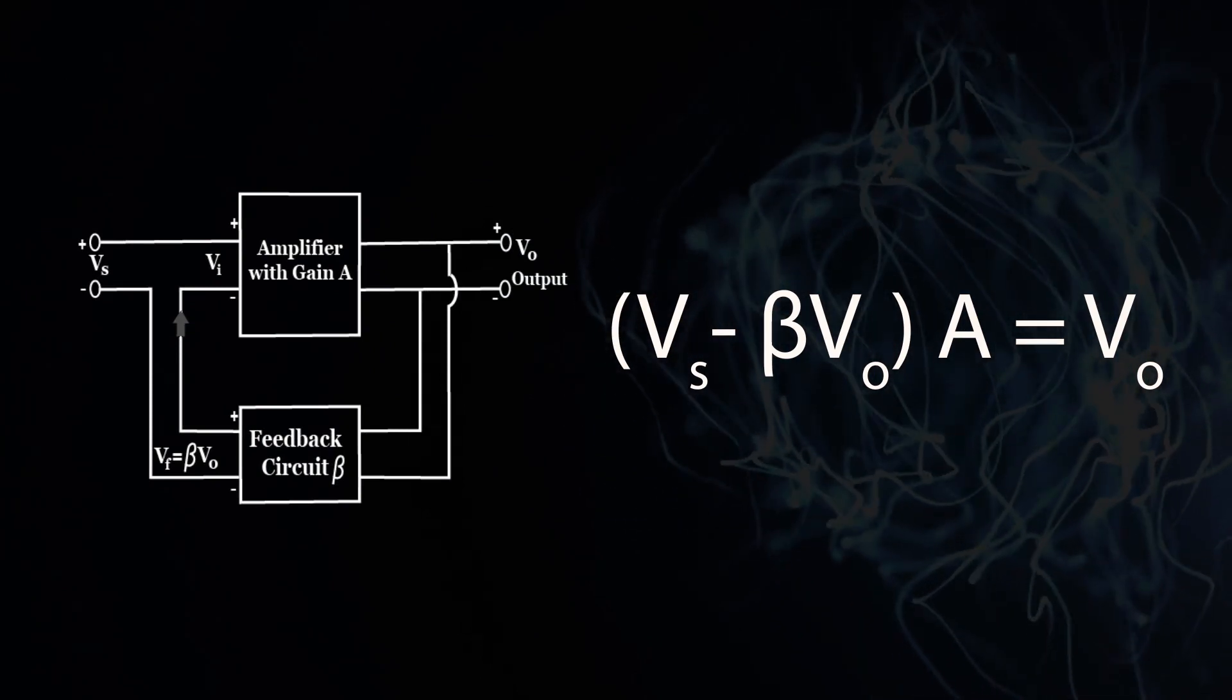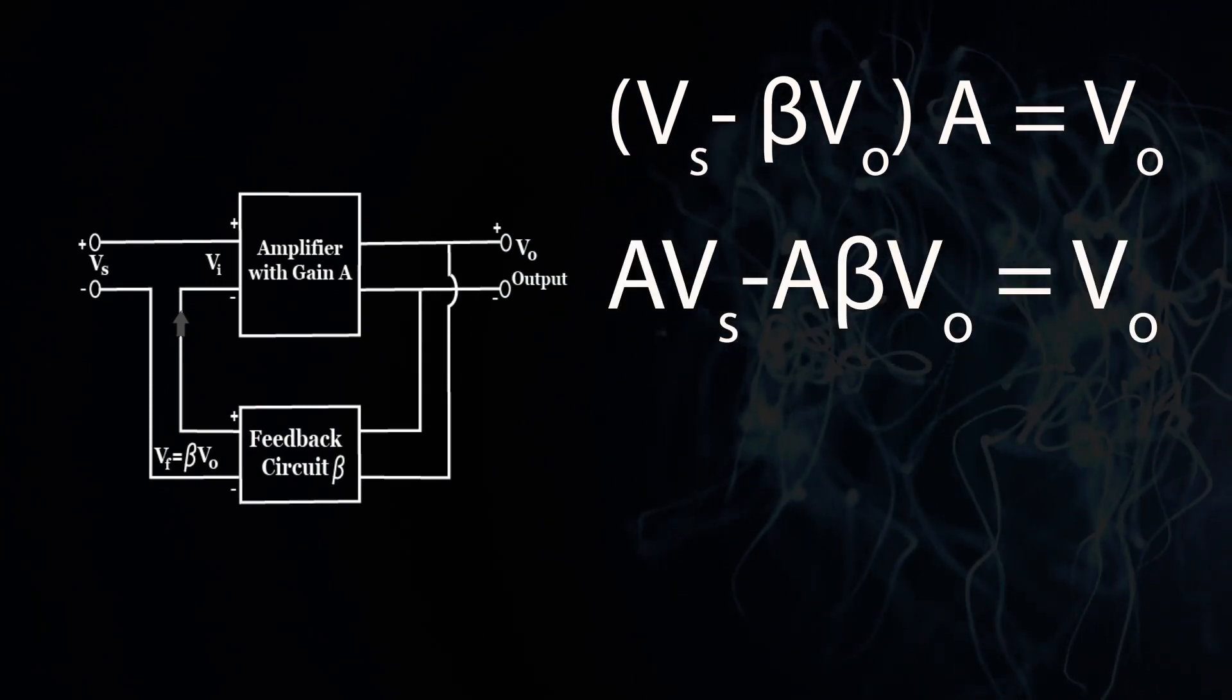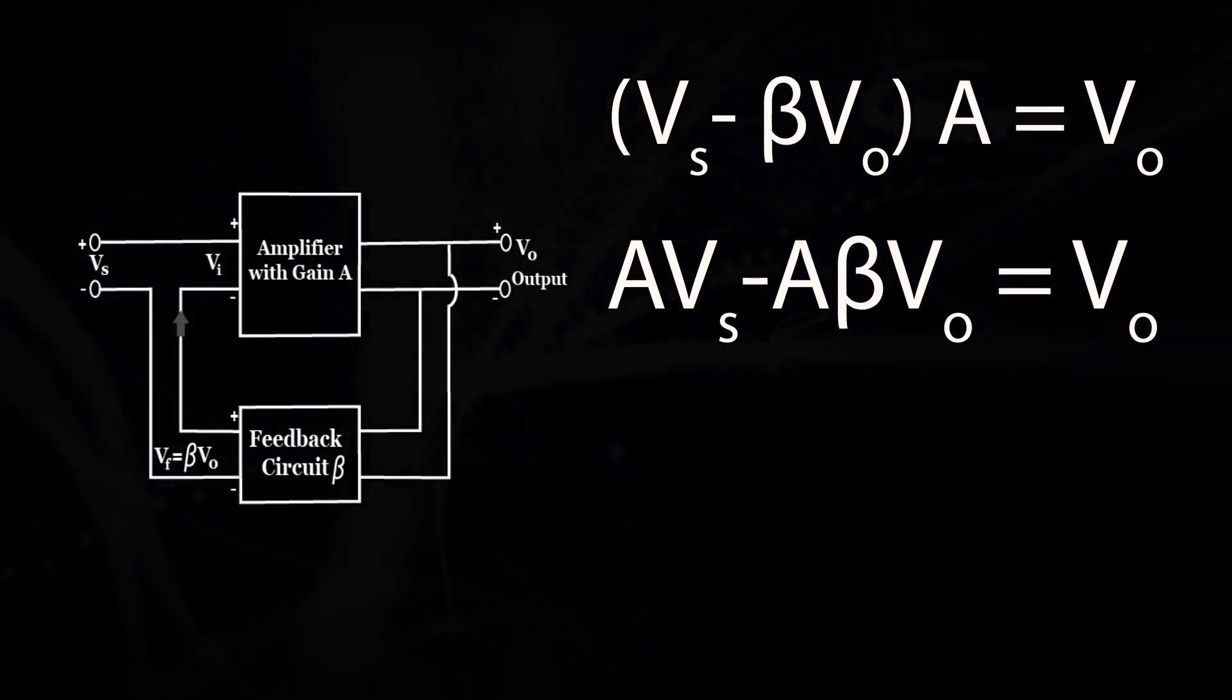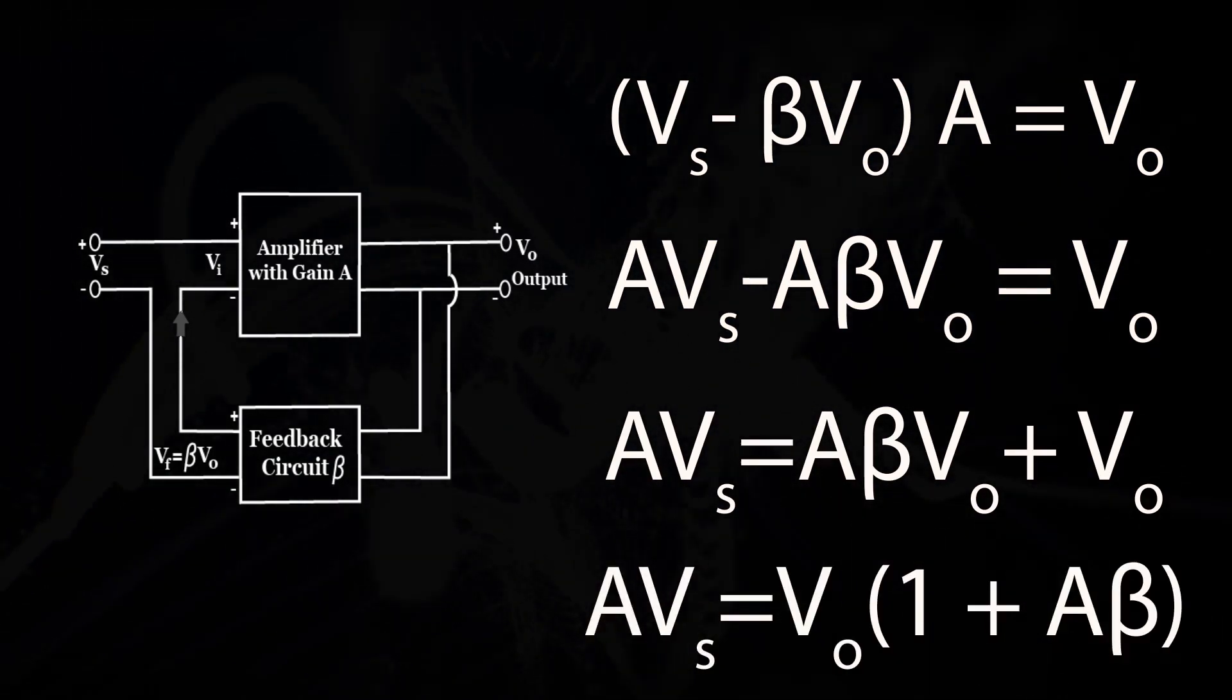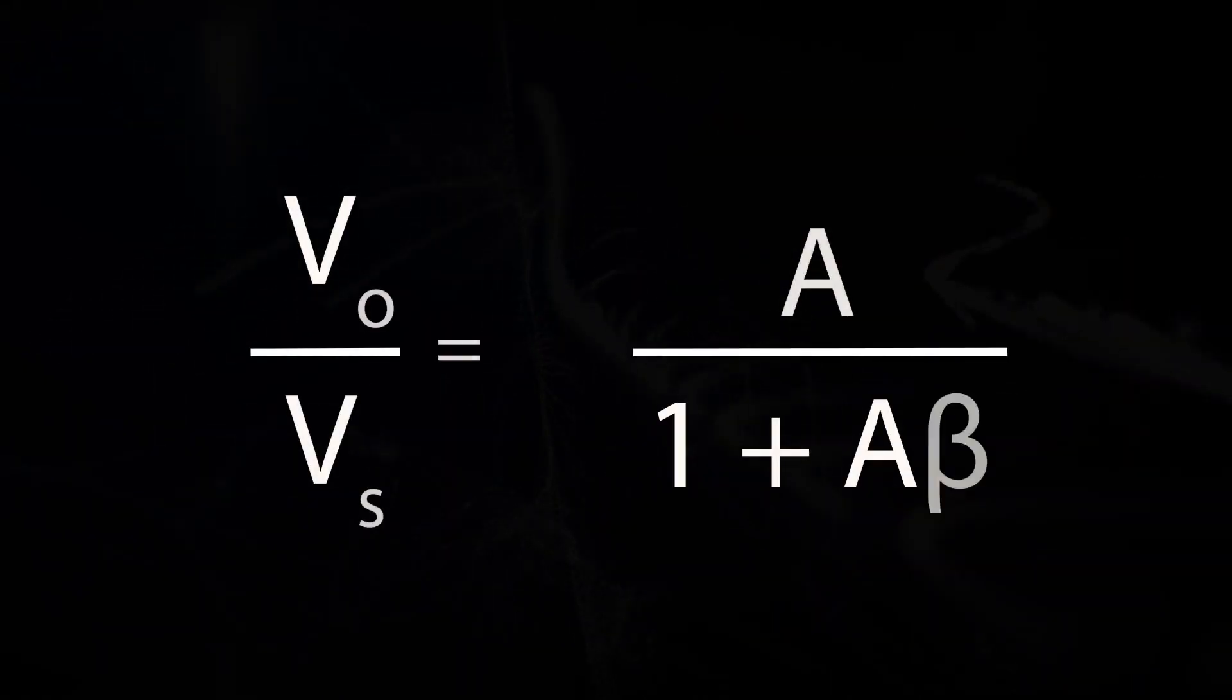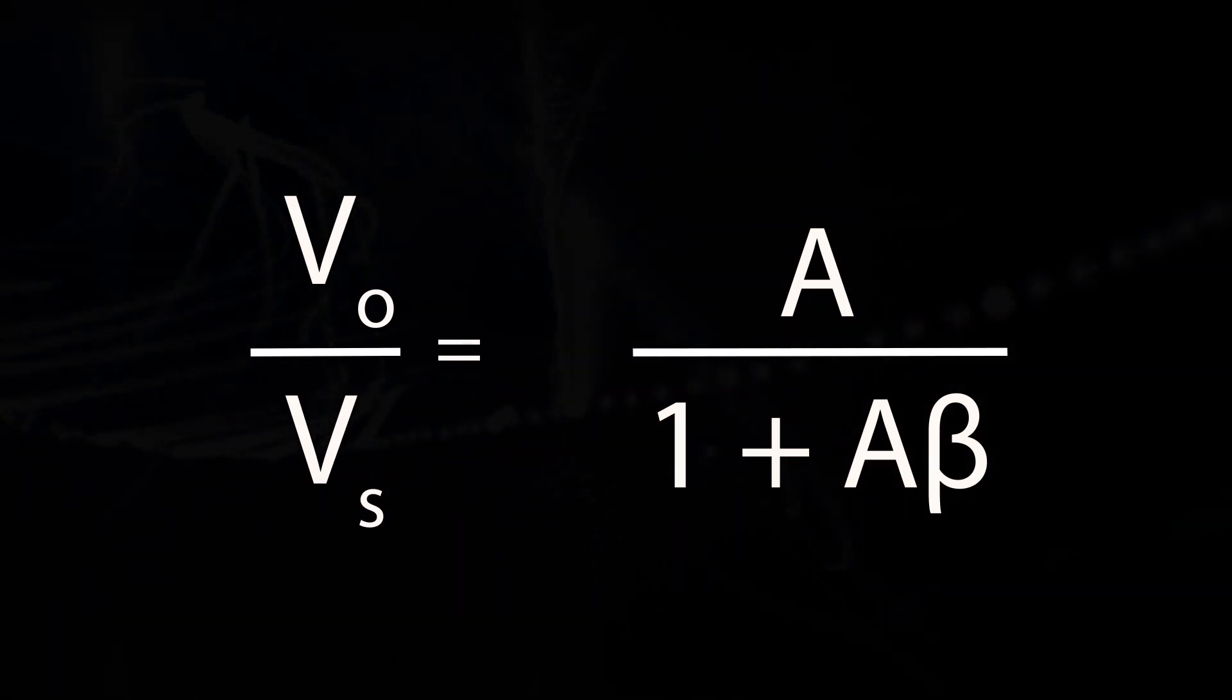Hence, Vs minus beta Vo into A equals Vo. A Vs minus A beta Vo equals Vo. A Vs equals A beta Vo plus Vo. A Vs equals Vo into 1 plus A beta. Therefore, Vo by Vs equals A by 1 plus A beta.